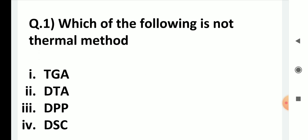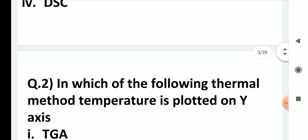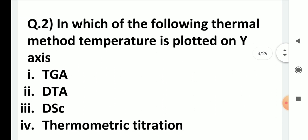The question is: which of the following is not a thermal method? TGA, DTA, and DSC are thermal methods, whereas DPP is differential pulse polarography — this has nothing to do with thermal methods. So DPP is not a thermal method, and the answer is three.